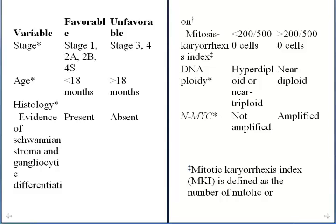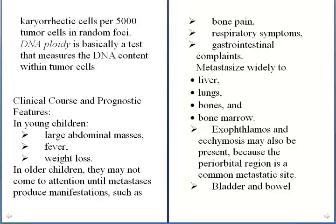On the other hand, unfavorable prognosis is associated with tumor in stage 3 or 4, age greater than 18 months, no evidence of schwannian stroma and gangliocytic differentiation, a mitosis-karyorrhexis index greater than or equal to 200 per 500 cells, near-diploid DNA ploidy, and amplification of the MYCN gene. The mitosis-karyorrhexis index is defined as the number of mitotic or karyorrhectic cells per 5000 tumor cells in random fields, and DNA ploidy measures the DNA content within tumor cells.